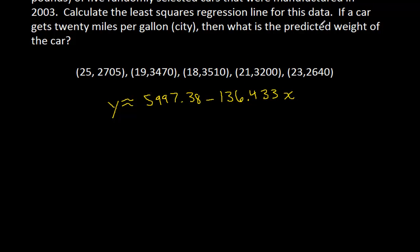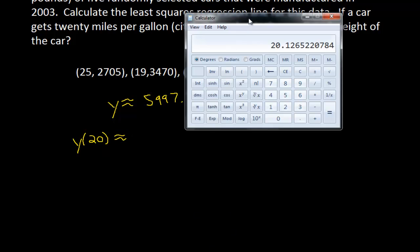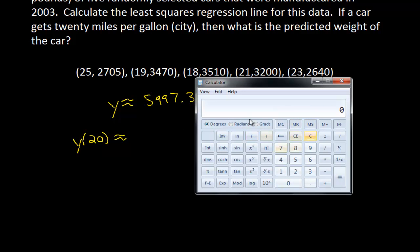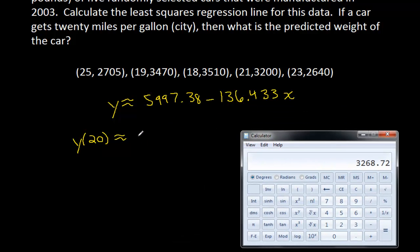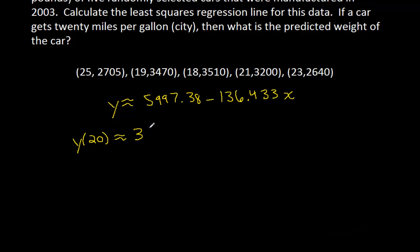Now if I want to know the predicted weight of a car that gets 20 miles per gallon, I plug in 20. So y(20) is approximately - I'll pull up my Windows calculator - 5997.38 minus 136.433 times 20, and we get about 3,268.72 pounds.